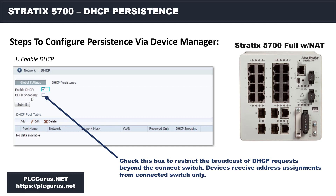You want to check the DHCP snooping box to restrict the broadcast of DHCP requests beyond the connected switch, so devices will receive their address assignments from the connected switch only. In my experience, in the automation work zone, I would typically turn on DHCP snooping so that any PC that wants to plug in and get online with your automation equipment in that cell gets assigned an IP address from the local cell-level switch. All address assignment will come directly from the connected switch.